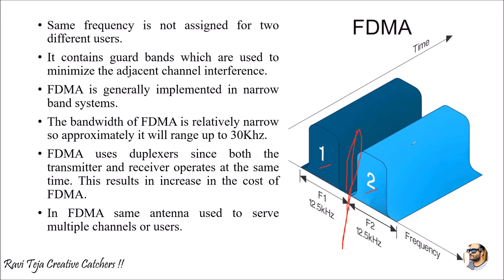Guard bands are very important — we have already seen in TDMA and several other concepts how guard bands protect between unique channels or unique time slots, ensuring there is no adjacent channel interference. FDMA is generally implemented in narrow band systems.